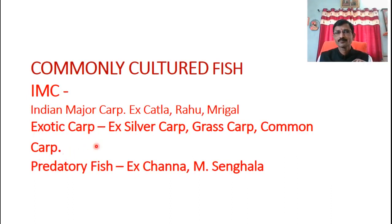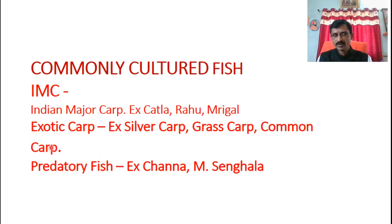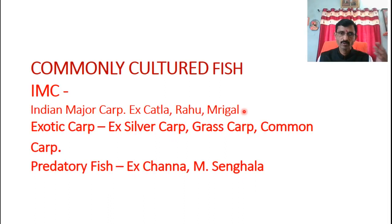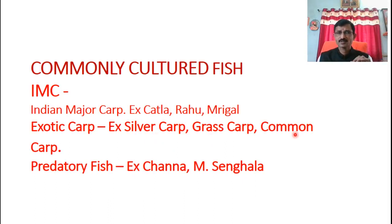Next is exotic carp. What is exotic carp? Exotic carp means those fishes which belong to foreign countries and have been introduced in India for commercial purposes. Which are they? Silver carp, Grass carp, and Common carp. Carp means toothless mouth. Examples from India: Katla, Rohu, Brigham. From foreign countries: Silver carp, Grass carp, and Common carp. Also, some predator fishes like Channa and Singala are important and commonly cultured in areas.